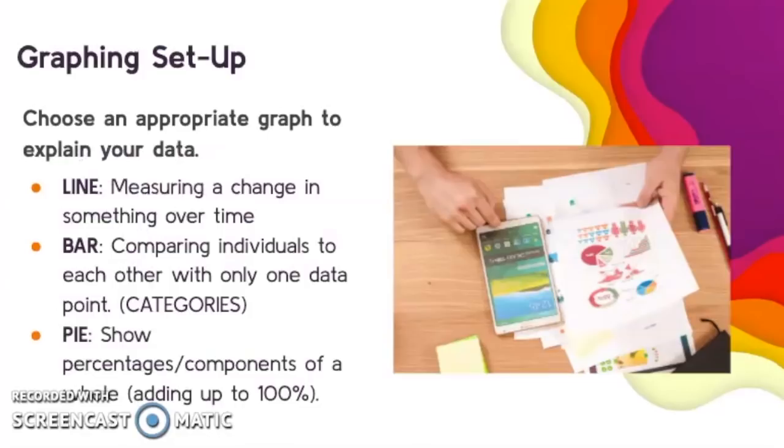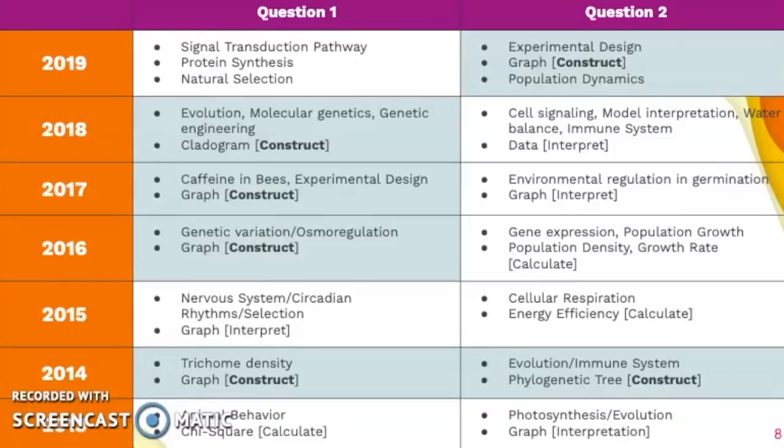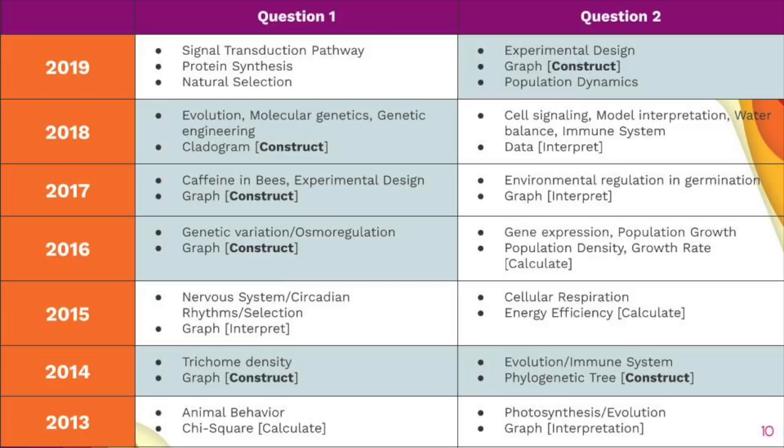You probably won't have to make a graph if you are taking the 2020 version of the AP biology exam, but you may need to interpret a graph or state which type of graph would be best. Line graphs are best for measuring a change in something over time. Bar graphs are good for comparing individual categories to one another. Pie graphs are good for showing percentages or components of a whole that add up to 100%.